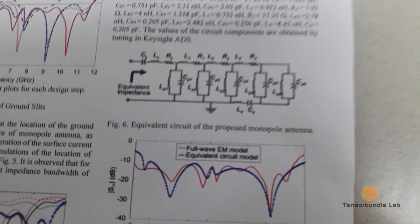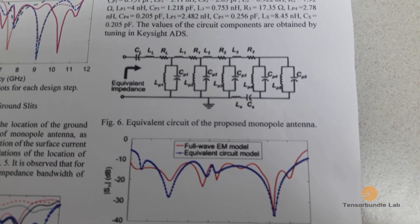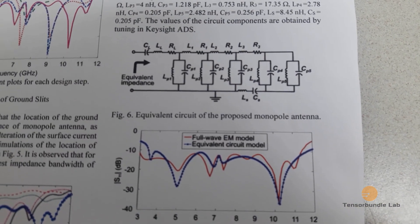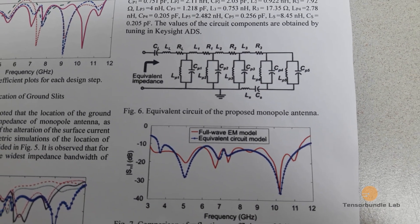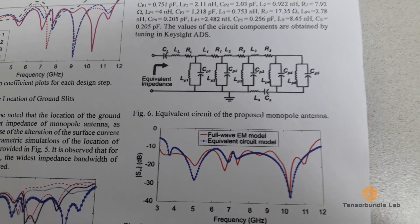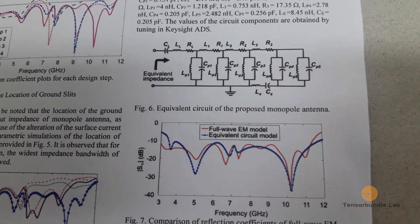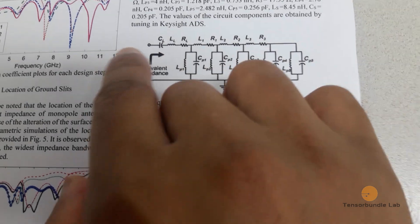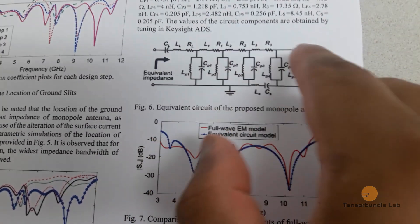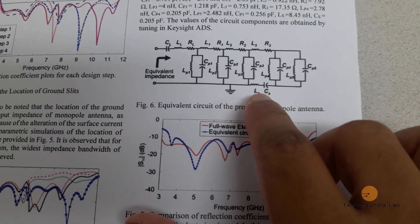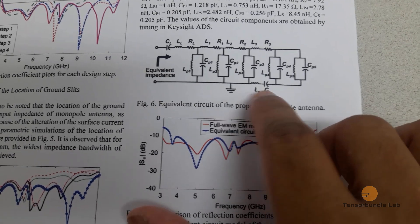And we also developed an equivalent circuit model of the proposed monopole antenna. As you can see, we developed this circuit. Basically we modeled this antenna by using LC cascaded resonators, and these are the line inductance and resistances. We also modeled the stub by using this inductance and capacitance.